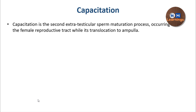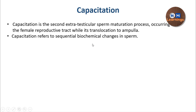Sperm maturation happens at two levels: the first is in the epididymis and the second is in the female reproductive tract. Sperm taken from the testis has no motility and no fertilizing capacity; it acquires these in the epididymis. However, sperm from freshly ejaculated semen still has reduced fertilizing capacity and reduced motility. Capacitation, occurring in the female reproductive tract, further increases both its motility and fertilizing capacity. It refers to sequential biochemical changes involving the proteins and lipids of the sperm.